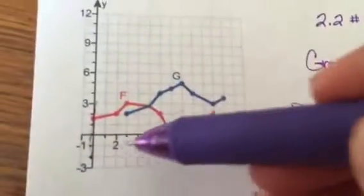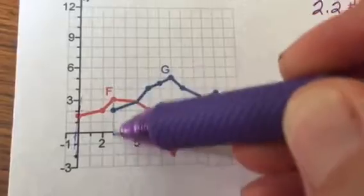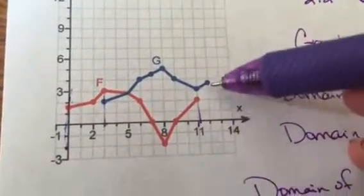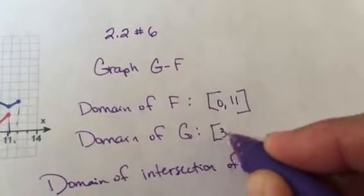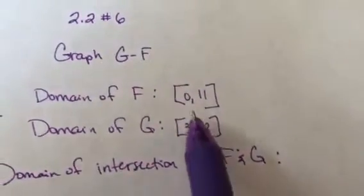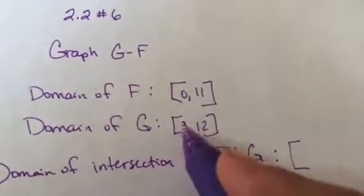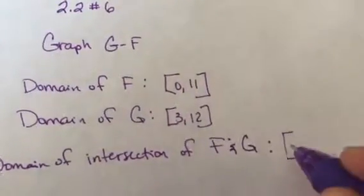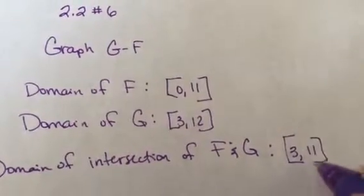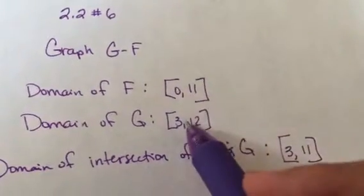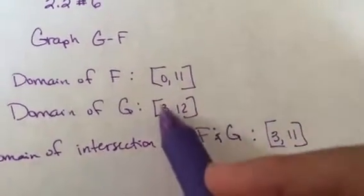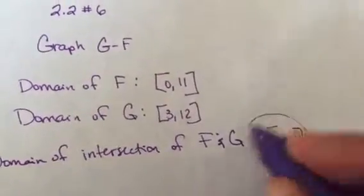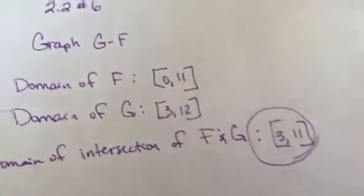The domain of g goes from 3 to 12. So it goes from 3 to 12. So the intersection is going to be both sets at least go from 3 to 11. So notice that the 11 is inside here, the 3 is inside here. So I'm only going to use the values from 3 to 11.